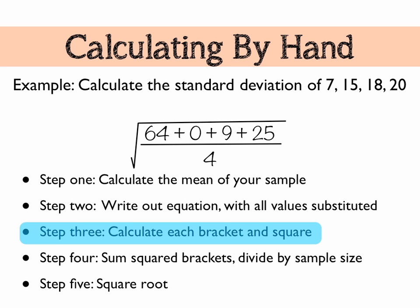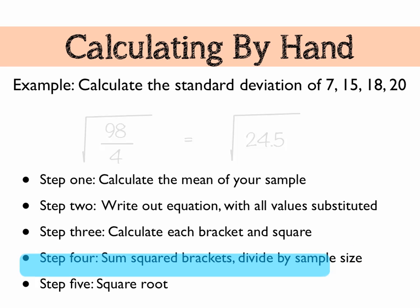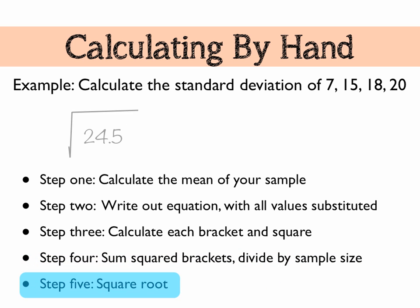Step four is going to be to sum those and divide by the sample size. There we go. So 98 over 4, rooted, is equal to 24.5, rooted. Don't forget to square root. A lot of people leave this behind and somehow get lost. Step five, we square root. So that gives our answer for standard deviation of that sample of 4.95 to three significant figures.